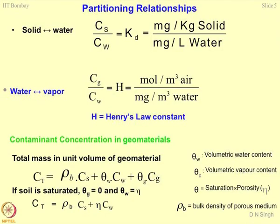In general, how would you quantify this partitioning relationship? Suppose we are talking about a solid-water interface, a saturated soil. This is how you define the Kd parameter. What is Cs? It is the concentration of contaminants getting sorbed onto the solid phase, and Cw is the concentration in solution form. If you take the ratio of these two, this is nothing but Kd. It is always defined as milligrams of contaminants per kg of solid soil mass or porous media.